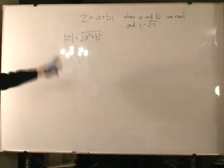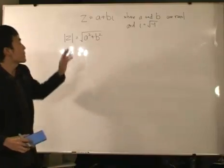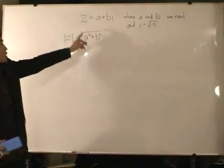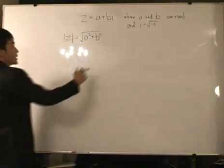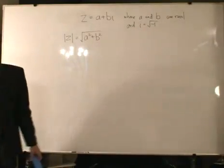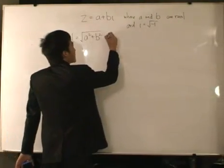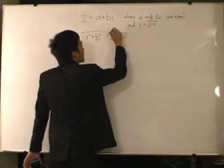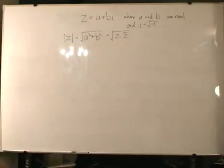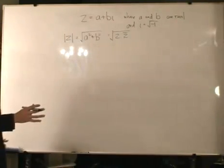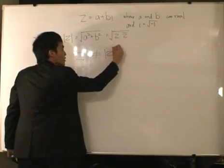The magnitude is defined as the square root of a squared plus b squared. You can think of it in the sense of vectors: A goes one way, B goes another, and the magnitude is the square root of a squared plus b squared. It's also important to note that the magnitude of Z equals the square root of Z times the conjugate of Z. However, it's vitally important to know that Z squared does not equal the magnitude of Z squared.